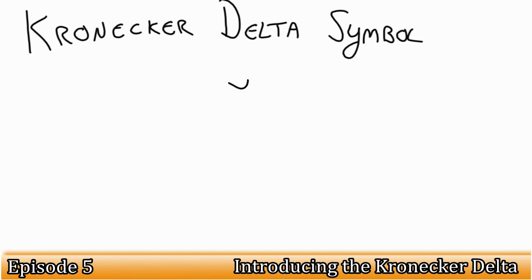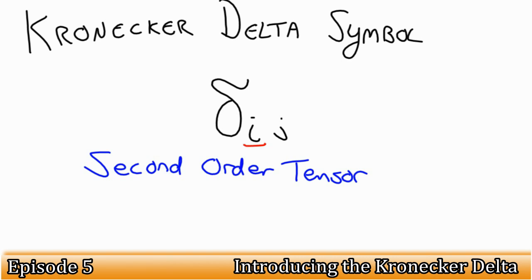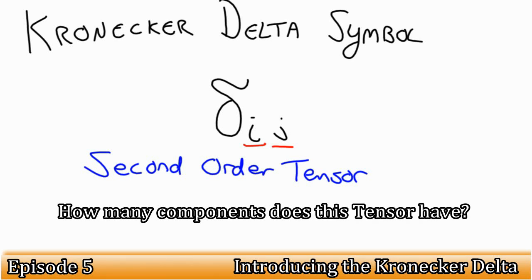We shall first consider how to write the Kronecker Delta symbol. We write it as Delta IJ. So what can we tell about this symbol? From what we've already learned, we can see that it's a second order tensor, with indices I and J. Using conventional dimensions for the indices, how many components does the Kronecker Delta have?